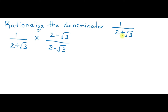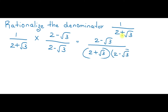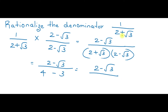Here the numerator becomes 2 minus root 3. The denominator is of the form A plus B into A minus B, which equals A square minus B square — that is 2 squared minus root 3 squared, giving 4 minus 3, which equals 1. So the answer is 2 minus root 3 divided by 1, which is equal to 2 minus root 3.